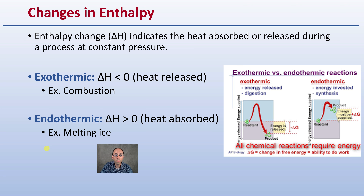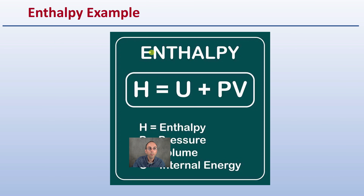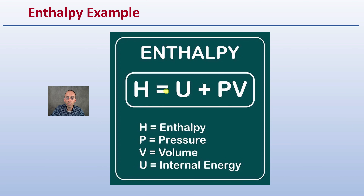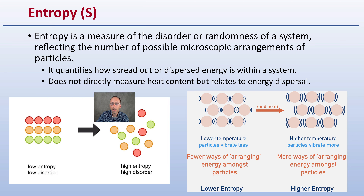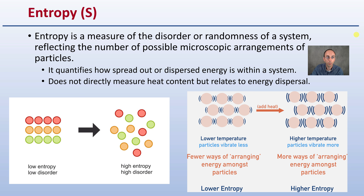A positive delta H is an indication of processes like ice melting. So keep in mind: a negative enthalpy means heat is being released, and a positive enthalpy means heat is being absorbed. Now, looking at entropy in contrast, represented by the letter S, this is a measure of the disorder or randomness of a system, reflecting the number of possible microscopic arrangements of particles.